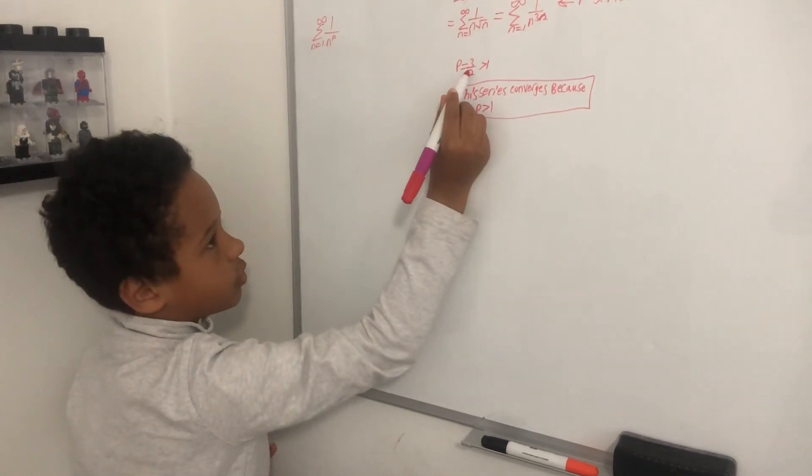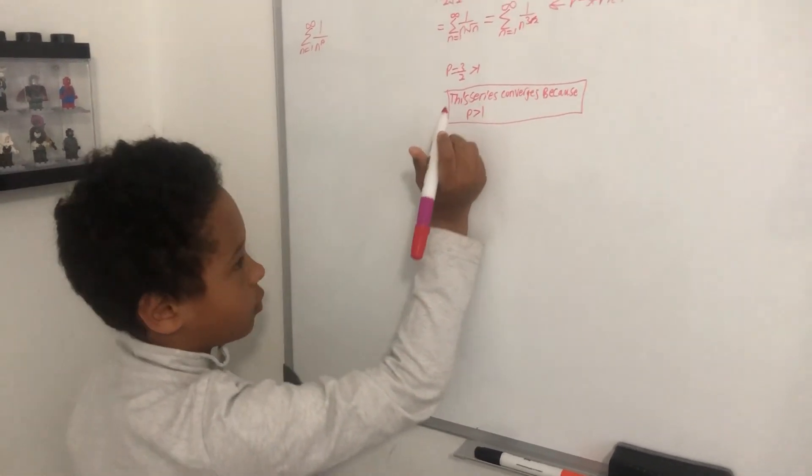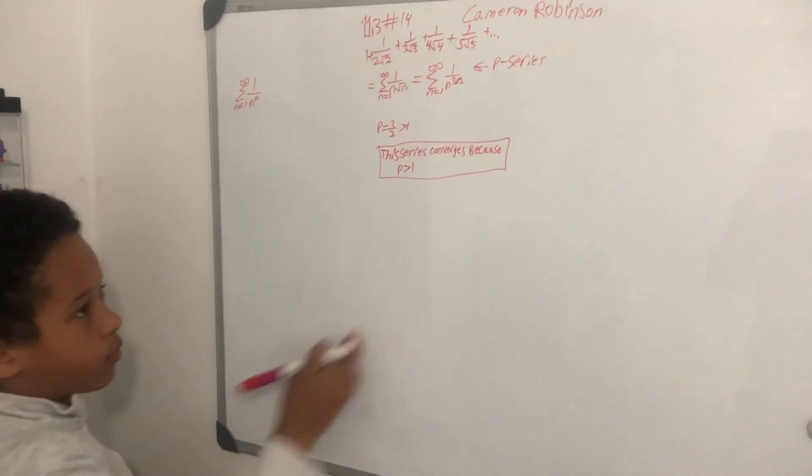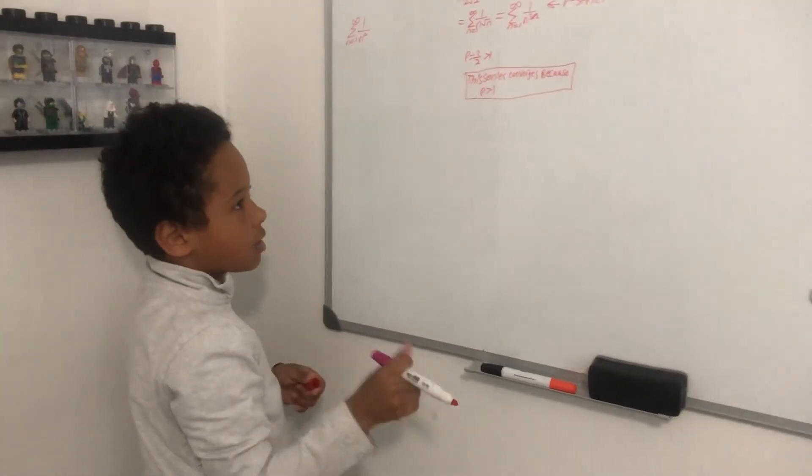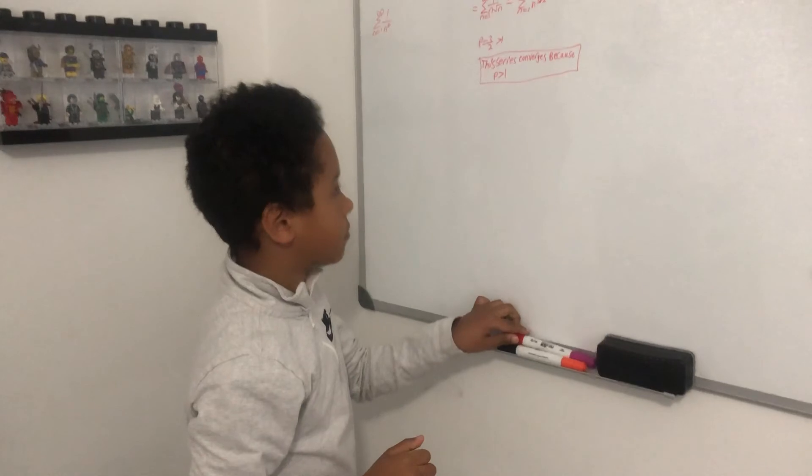In this case, it's greater than 1 because 3 halves is greater than 1. Therefore, the series converges because p is greater than 1.